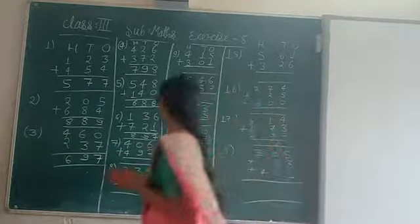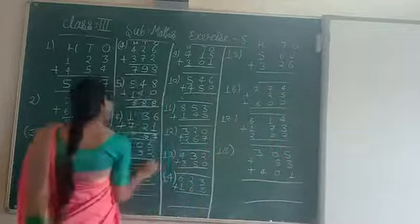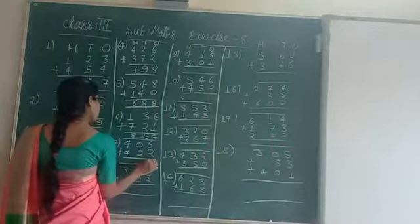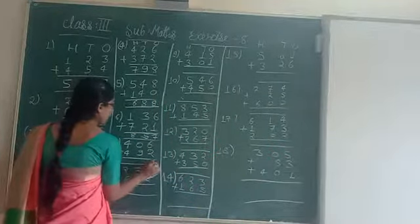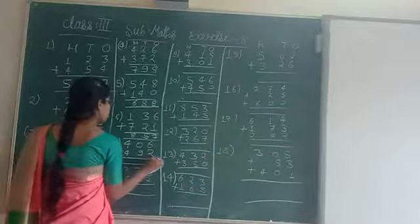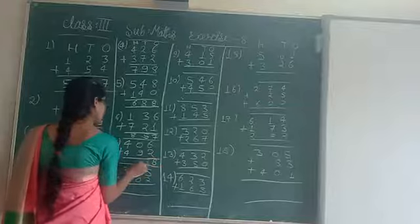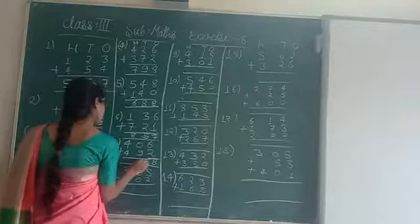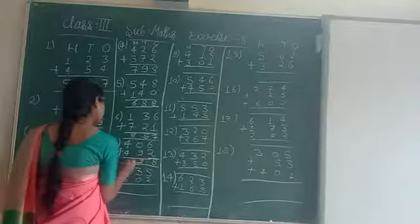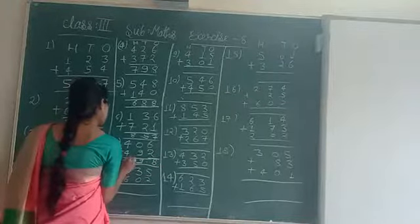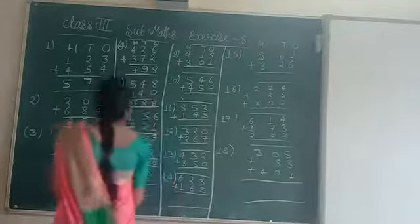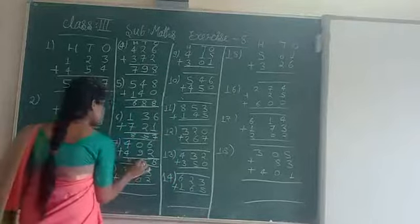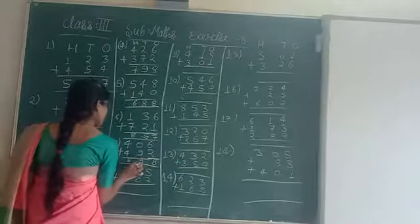6 plus 2 — 7 and 8. 9 plus 0 — if we add 0 to any number, we get the same number, so we get 9. 4 plus 4 is 8. 8 is the answer for question number 7.